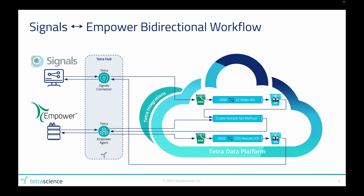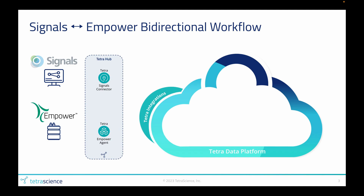In terms of the overall workflow, what we'll see is data originating in Signals Notebook and arriving in the Tetra Data Platform as a raw file. This will initiate a number of events to transform that data into a more actionable format and merge it with a template sample set method from Empower. This then writes a new sample set method into the Empower database, which can be used for the experiment. We're going to go through this step by step.